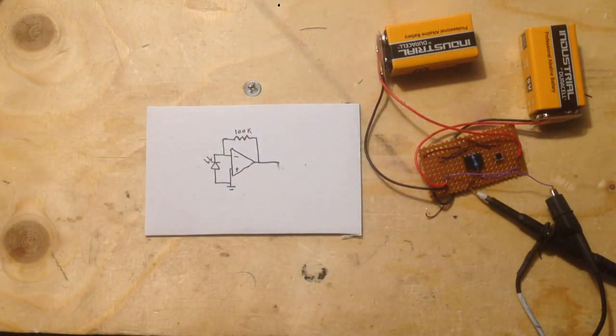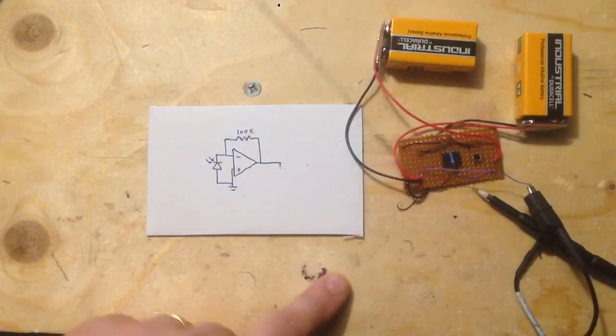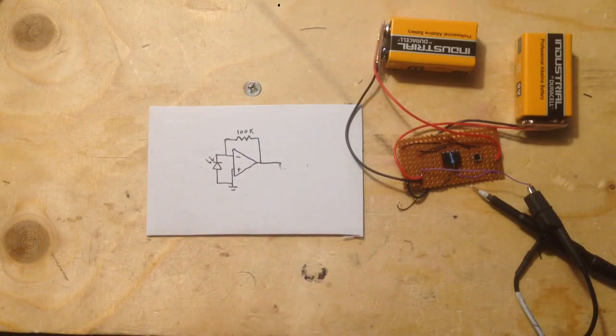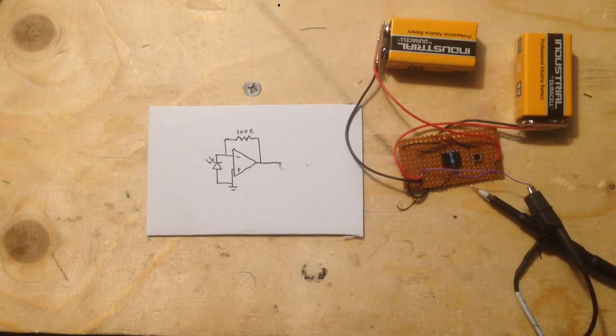So I made up this basic photodiode amplifier, transimpedance amplifier circuit today. Obviously with op-amps you need a positive and a negative rail, so you need a ground and then plus in this case 9 volts and minus 9 volts. You can do that if you've got either a couple of bench supplies, isolated bench supplies, or a bench supply that will produce positive and negative voltages.